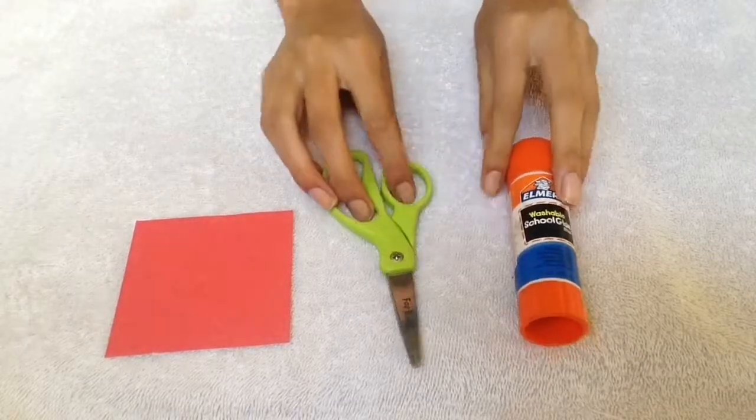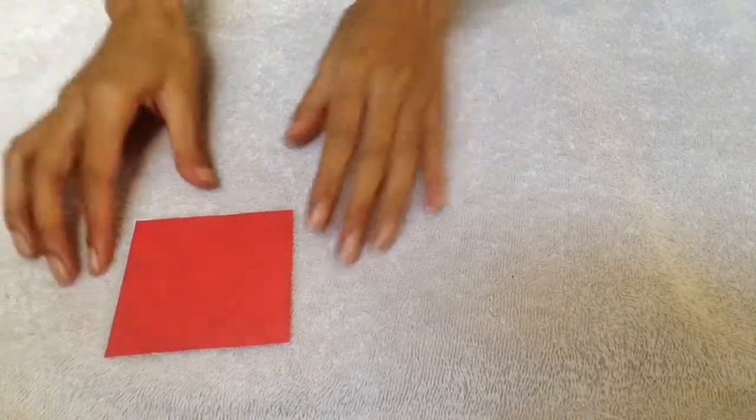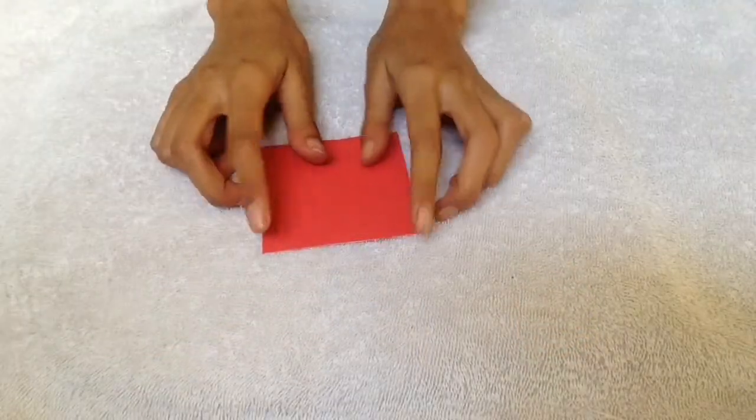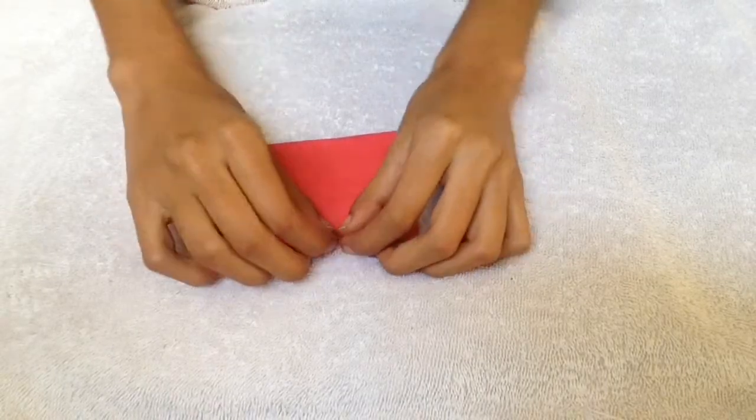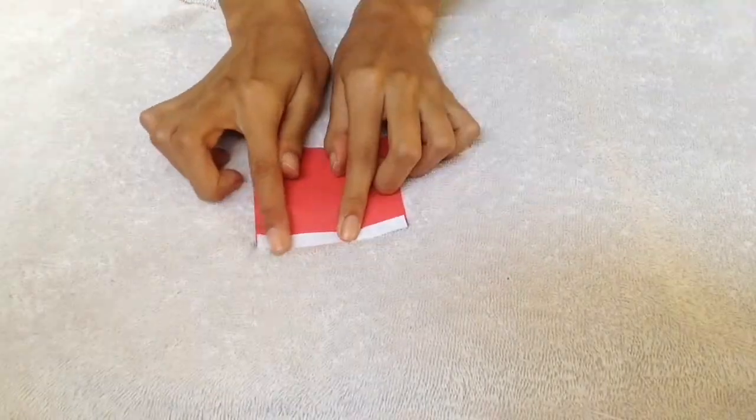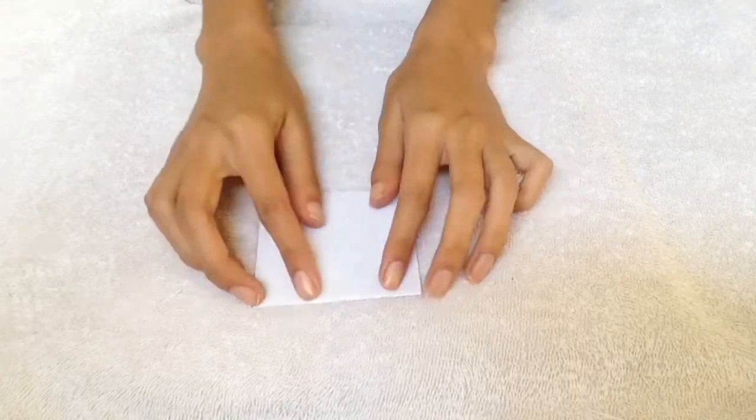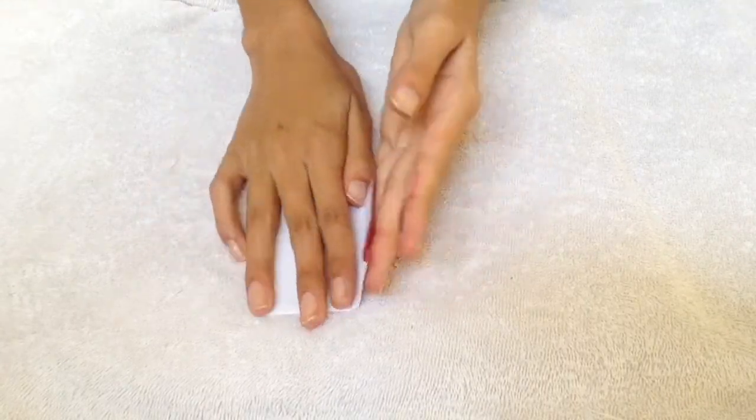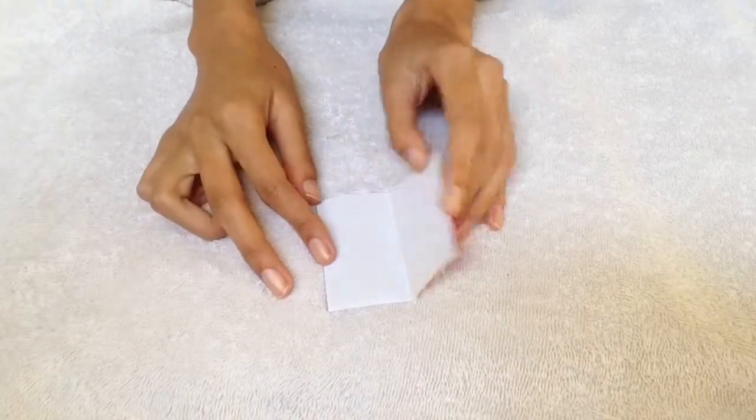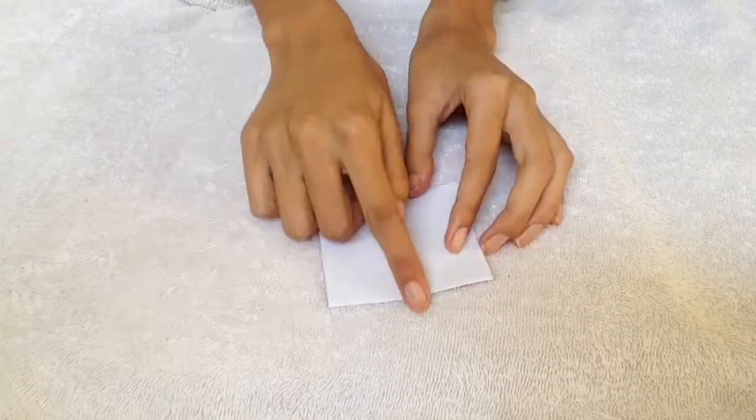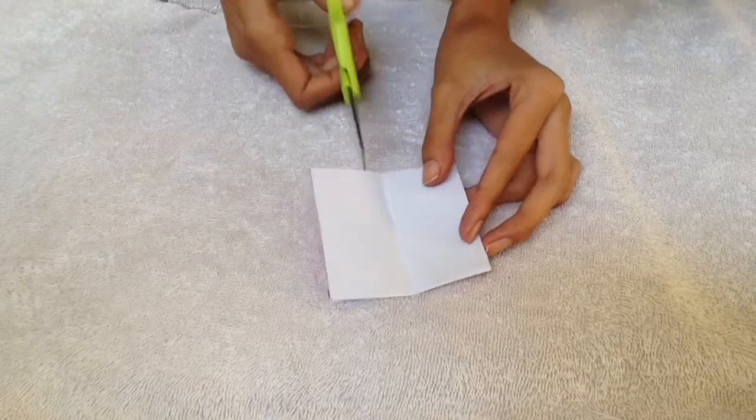Let's begin with the red side facing up. You want to make a small fold at the top and crease. This will be the boot's cuff. Flip it over so that the white side is facing up. Fold in half and crease. It should look something like this.